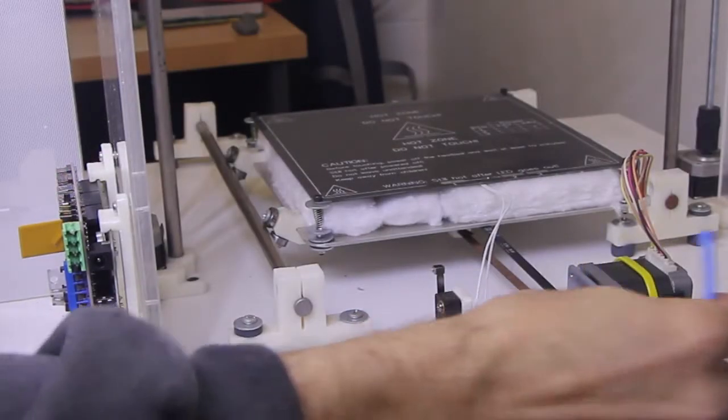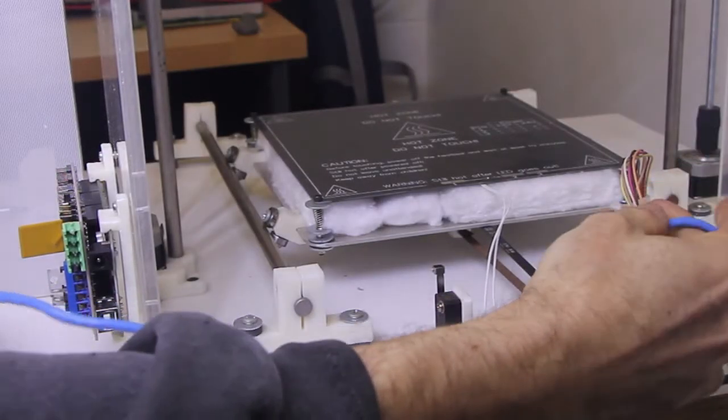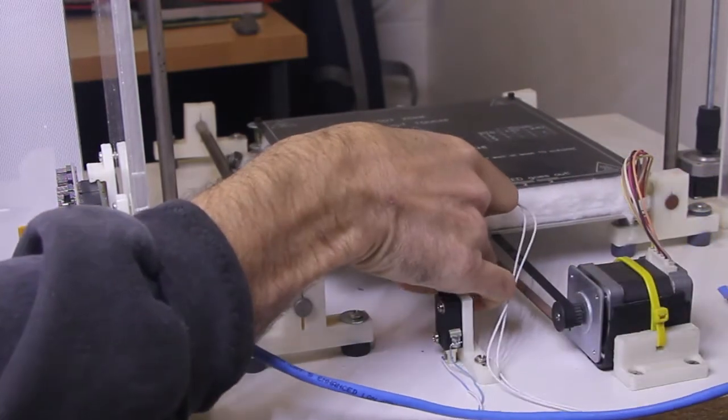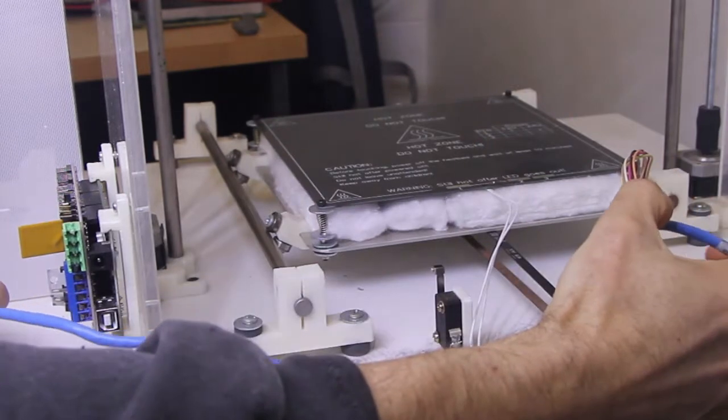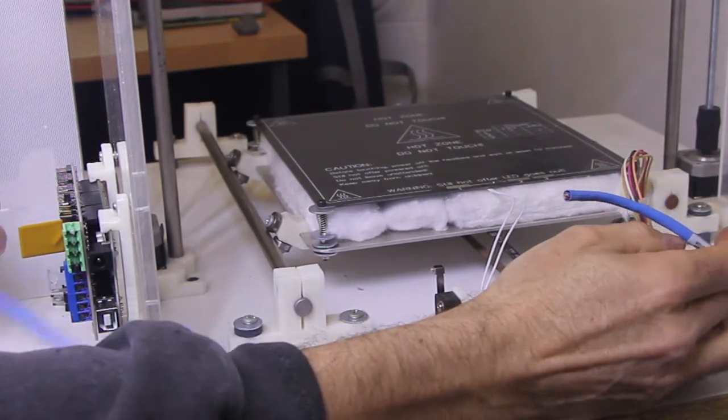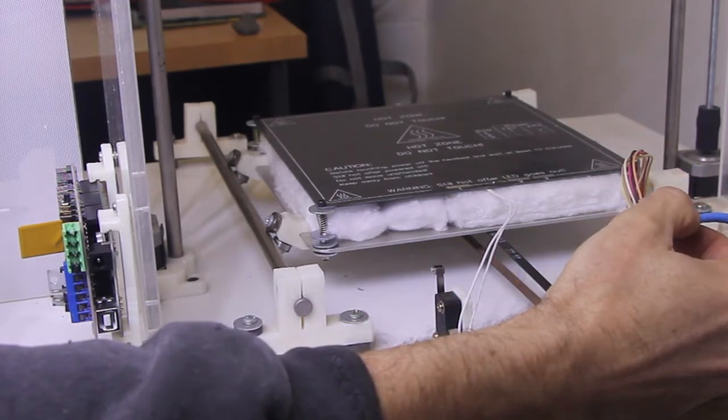So we're going to measure a piece of ethernet cable, and that's going to connect to our Y stepper motor, which moves the bed. We're going to measure a length to go from the motor back to the RAMPS, and give it a little bit of extra length for our cable management.